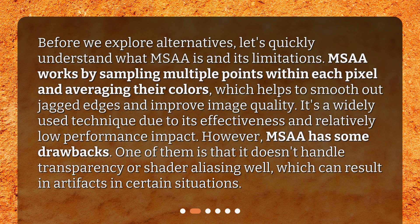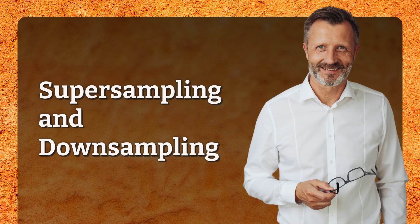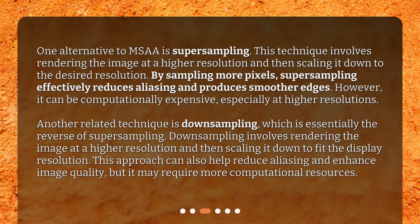One alternative to MSAA is super sampling. This technique involves rendering the image at a higher resolution and then scaling it down to the desired resolution. By sampling more pixels, super sampling effectively reduces aliasing and produces smoother edges. However, it can be computationally expensive, especially at higher resolutions.